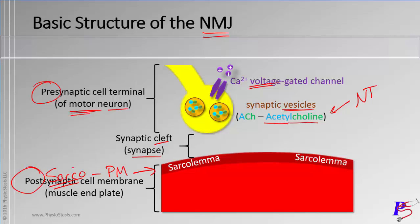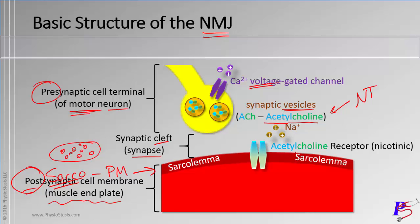On the other side, the postsynaptic side, we call this the motor endplate — it looks like a plate when viewed from above, with the boutons on top. On the postsynaptic membrane, you have a receptor for the neurotransmitter acetylcholine. This is a nicotinic receptor — not muscarinic, which we'll cover in the nervous system. It allows sodium to pass through, with sodium flowing in. There is also a little potassium going out, but since there's a greater influx of sodium, we'll focus on sodium.